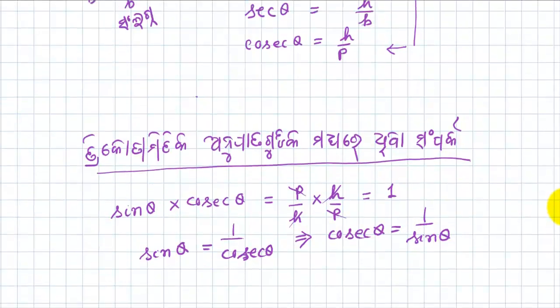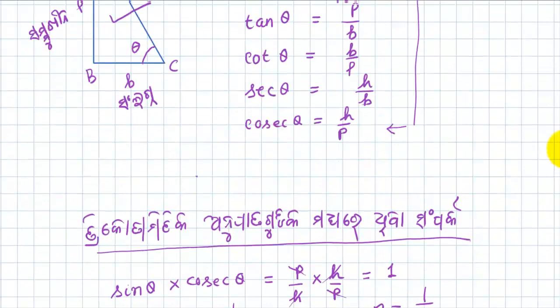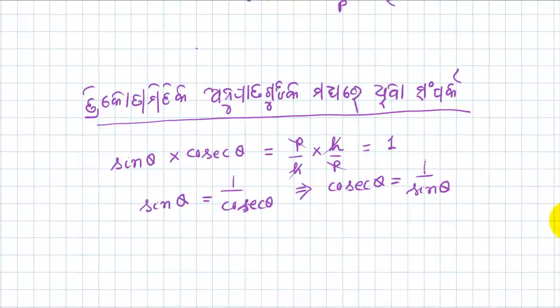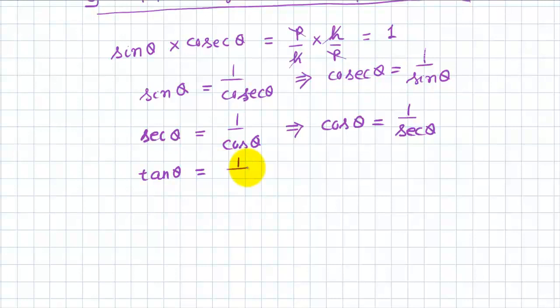So if we know sine theta, then we can find cosec theta by calculating 1 by sine theta. Similarly, you should remember that sec theta is 1 by cos theta, or conversely cos theta is 1 by sec theta. Also, tan theta is 1 by cot theta, and cot theta is 1 by tan theta.